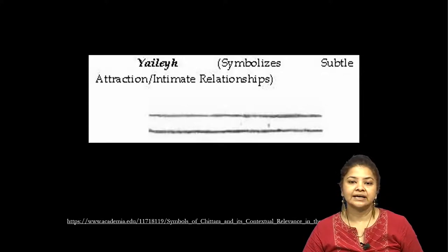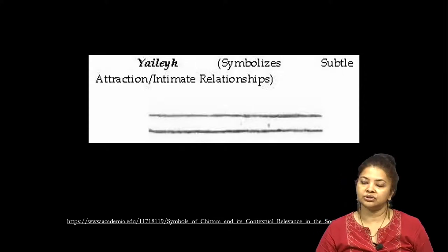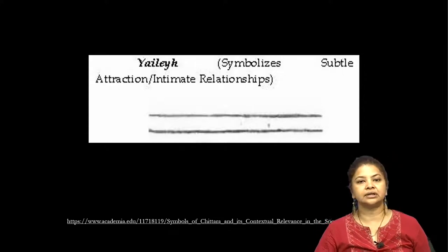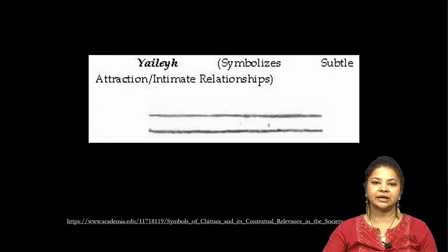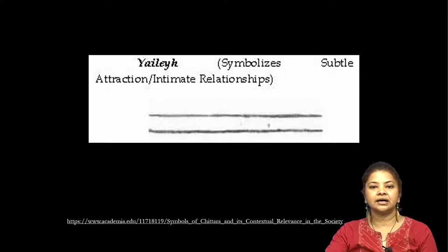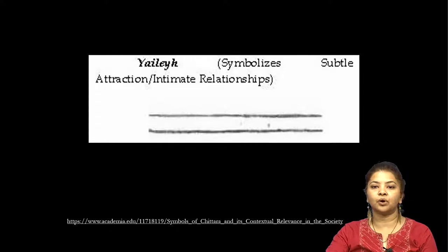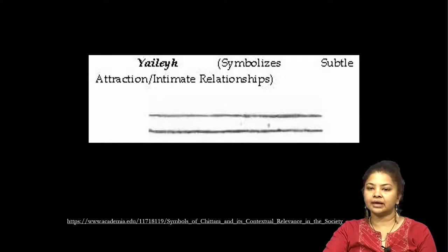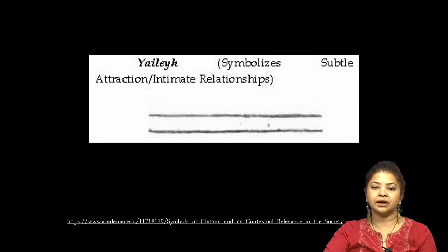These two parallel lines are the base of any Chitra painting — no Chitra painting can start without these two lines. The painting always begins with drawing two parallel lines. These lines are supposed to represent attraction between two people — it can be the bond between a mother and a child, a couple, or any other such relationship — symbolizing a sacred bond between two people.